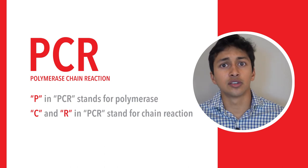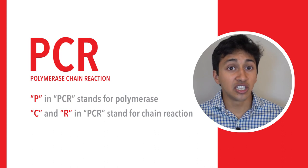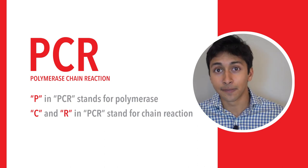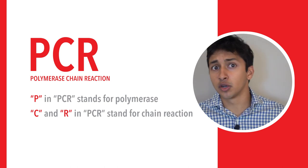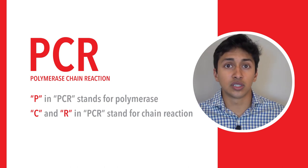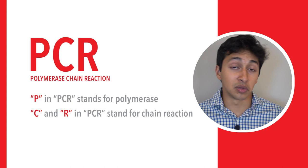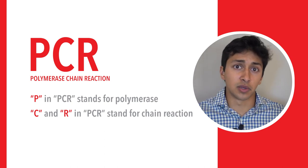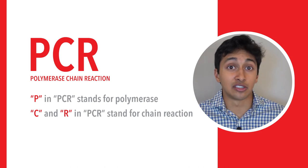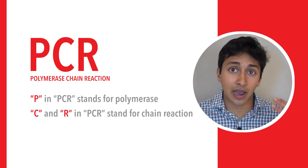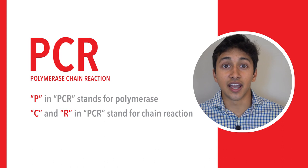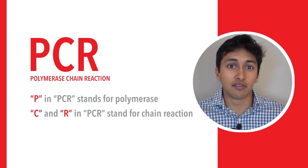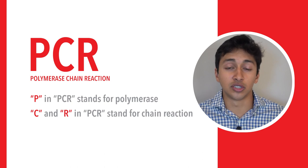A machine known as a thermocycler simply repeats the three steps over and over again. A typical PCR experiment or protocol might result in 30 to 40 rounds of duplication that can be completed in just a few hours. After those 30 to 40 rounds of duplication, there could be as many as 2 to the power of 30 or 2 to the power of 40 copies of DNA, which is millions and millions of copies created from just one original double-stranded piece.